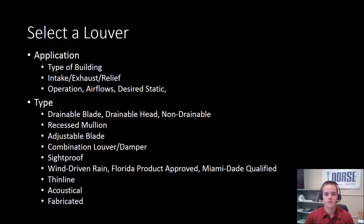Here is a list of the many types of louvers Greenheck offers. Typically the more popular are the drainable blade, wind-driven rain, and acoustical. It's important to note that combination louver dampers are available, but the damper portion won't meet low leakage ratings at this time. Greenheck also offers architectural grills, but I won't cover those in this presentation.